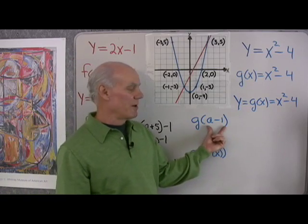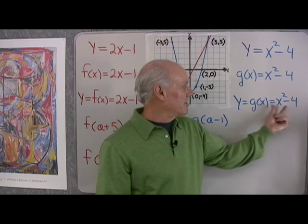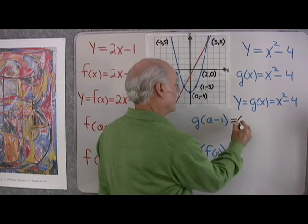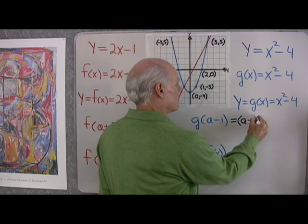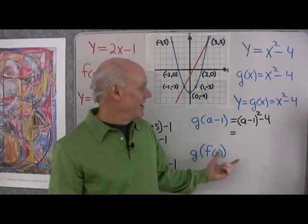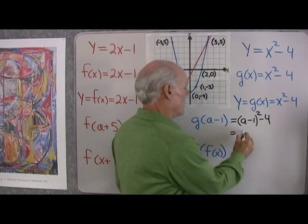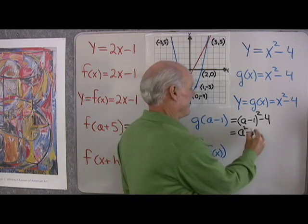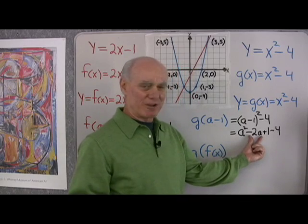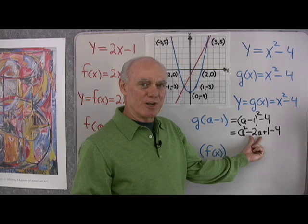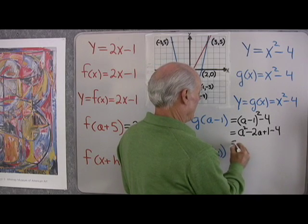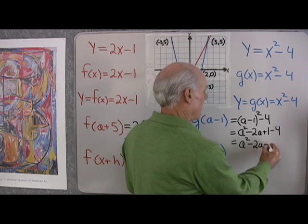Now let's look at g of x. What about g of a minus 1? Since g of x is x squared minus 4, g of a minus 1 is (a minus 1) squared minus 4. I just follow the rule. Squaring a minus 1 gives a squared minus 2a plus 1 — don't forget the middle term, it's not a squared plus 1 or minus 1. So we get a squared minus 2a plus 1 minus 4, which simplifies to a squared minus 2a minus 3.